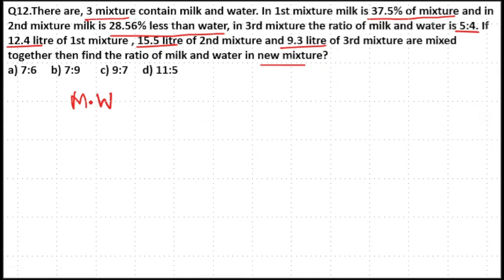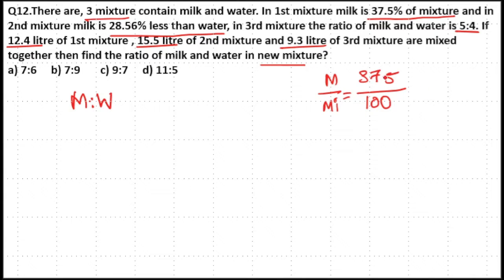For the first mixture, milk is 37.5% of the mixture, which is 37.5 divided by 100. Multiplying 37.5 by 10 gives 375, and 125 into 8 equals 1000, so if the mixture is 8 parts, milk will be 3 parts. That means water will be 8 minus 3, which is 5 parts. So the milk to water ratio is 3 to 5.